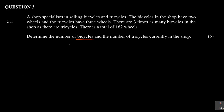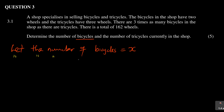We will start by defining our variables. Let the number of bicycles be equal to x. And also we are going to say let the number of tricycles be equal to y. So we are taking a stance to say let the bicycles be x and let the tricycles be equal to y. Now we need to change the statements that were given into equations.